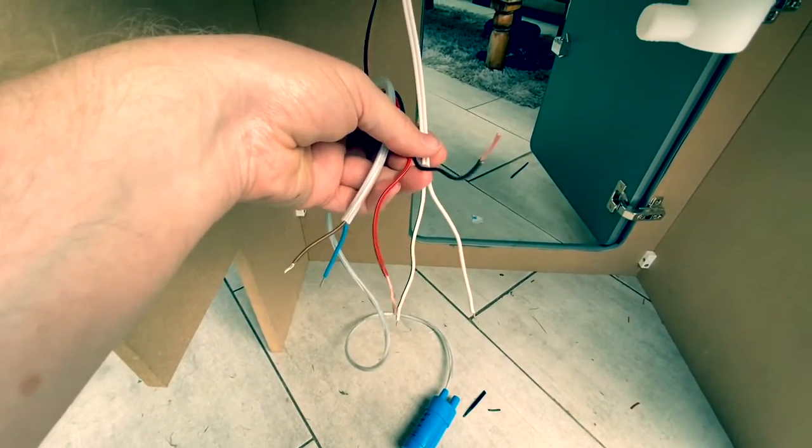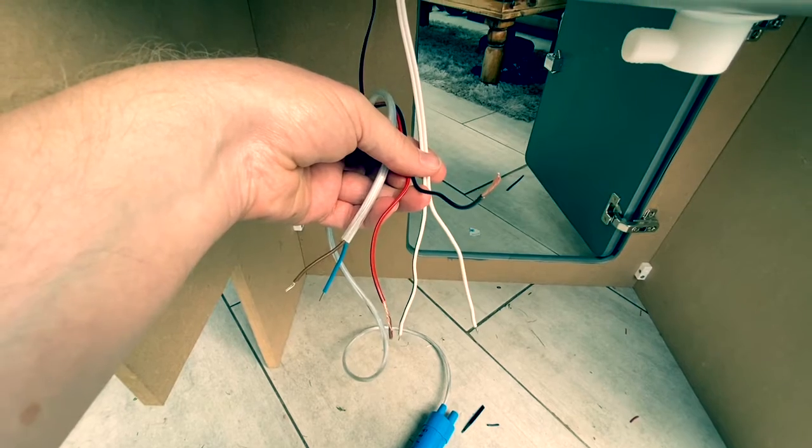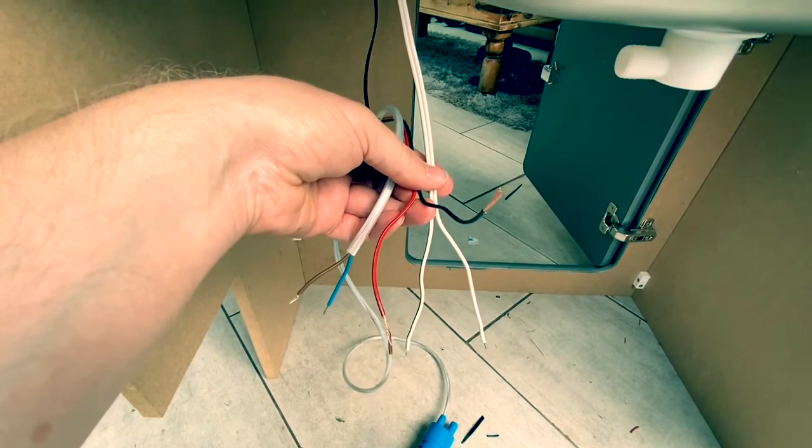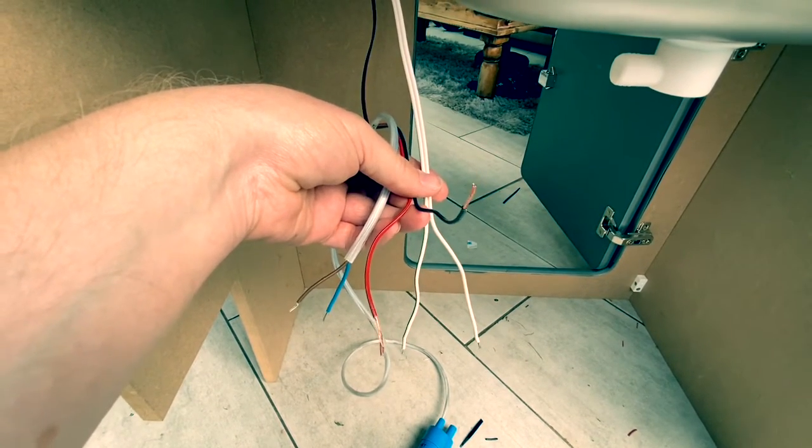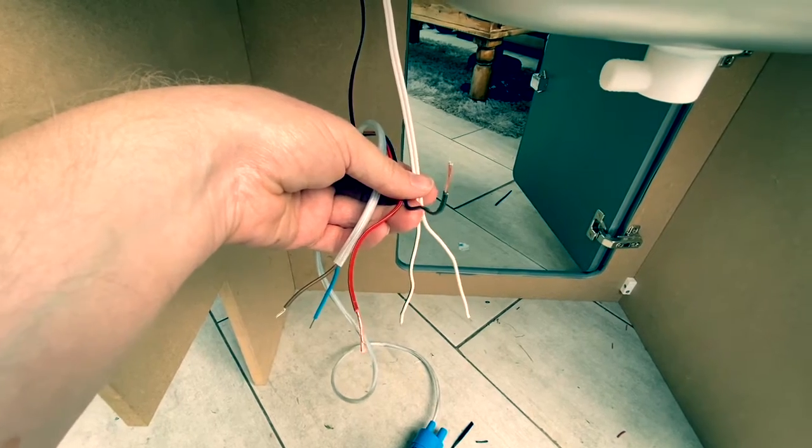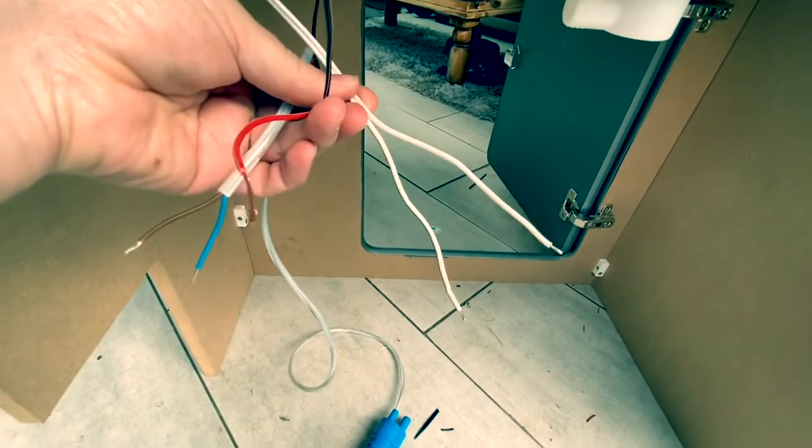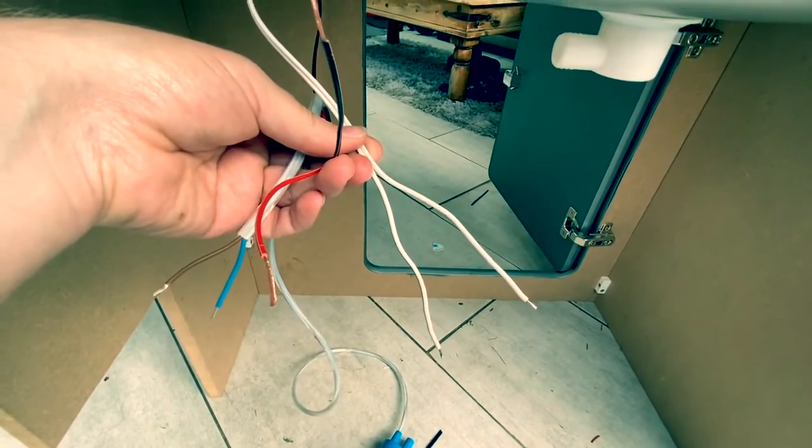In the center, I've got the positive and negative which will be running back to the leisure battery in terms of our ultimate power supply. And over on the right-hand side here is the actual wiring that goes to the micro switch.